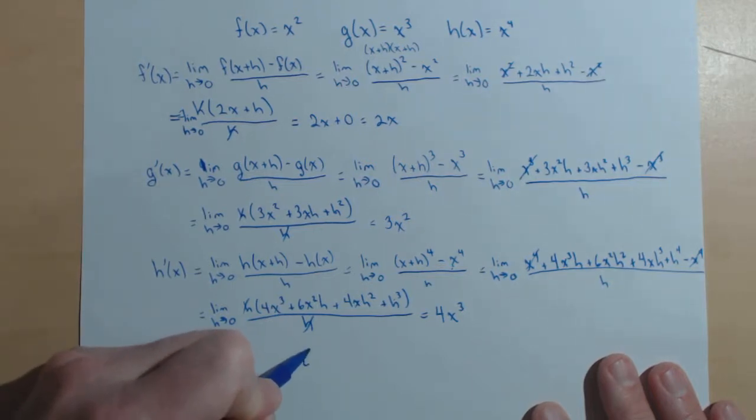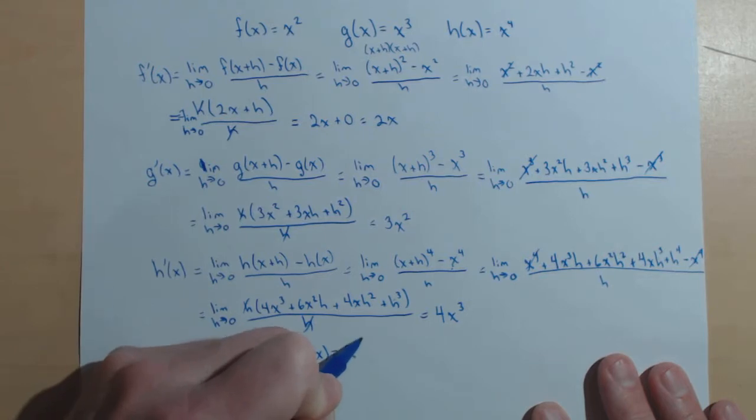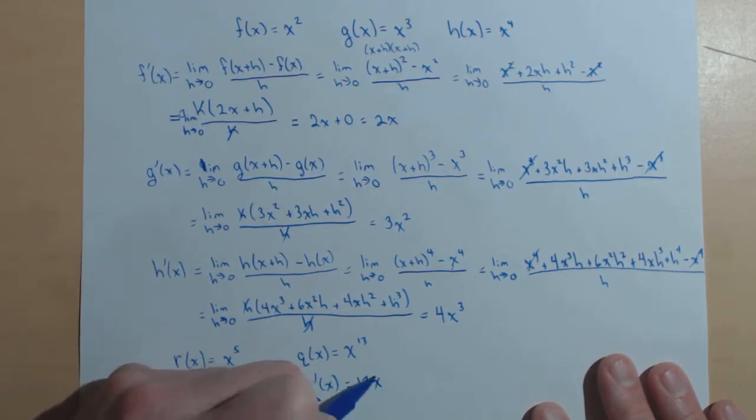If we had some function, call it q of x, that is x to the 13th, then q prime of x: drop the power down, 13x, decrease the power by 1 to the 12th.